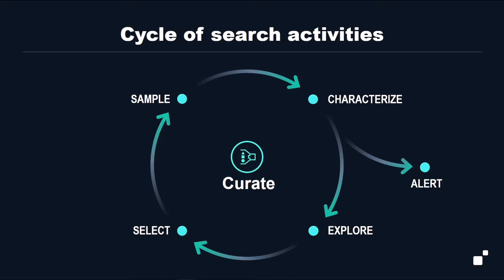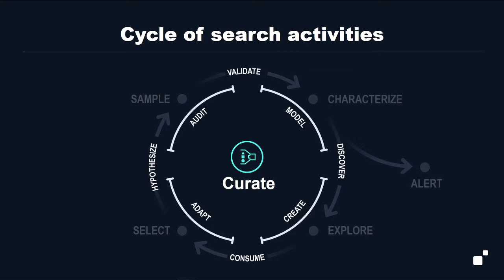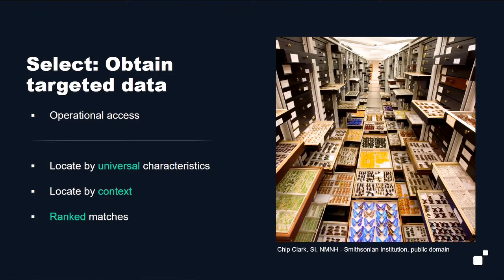There are a variety of search activities, and I've drawn some key ones here in a cyclical way. There's selecting and pulling out actual data for use. Sampling, characterizing, and exploring is often part of preparatory work. Getting alerts is sort of off on the side. And at the center of it all is curation — it's really all about curation. These are drawn as a circle, but there are a lot of interconnections. Between sampling and selecting there's hypothesizing. We're going to focus on the main ones and see how the search perspective applies.